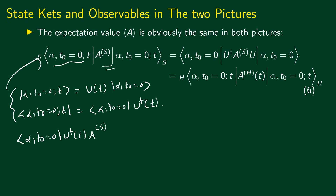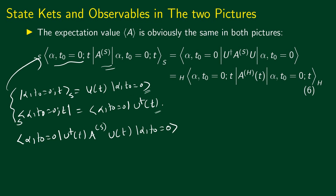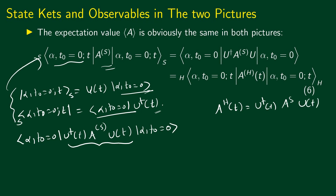Substituting back, the expectation value in the Schrödinger picture becomes ⟨α, t₀=0| U†(t) A^S U(t) |α, t₀=0⟩. We do not introduce a subscript for the state at t₀=0 because in both pictures, the state kets at t = 0 coincide — they are the same in both the Heisenberg and Schrödinger pictures.